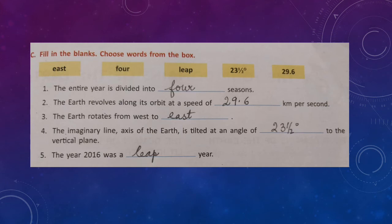Section C: fill in the blanks. Number 1: the entire year is divided into four seasons — spring, summer, autumn, and winter. Number 2: the earth revolves along its orbit at a speed of 29.6 kilometers per second. The earth rotates around its axis and the speed varies — 1600 kilometers per hour at the equator, decreasing towards the poles.